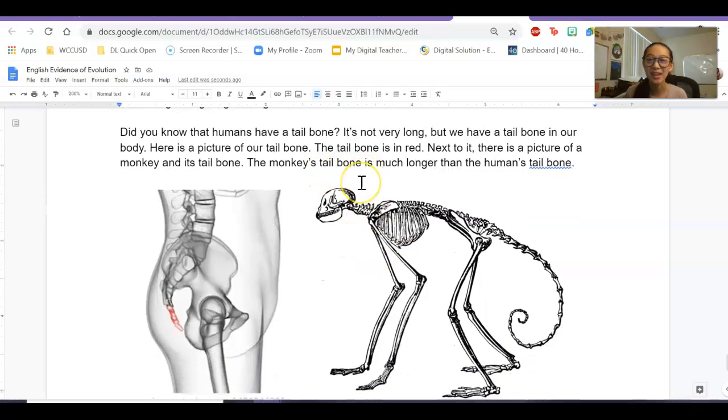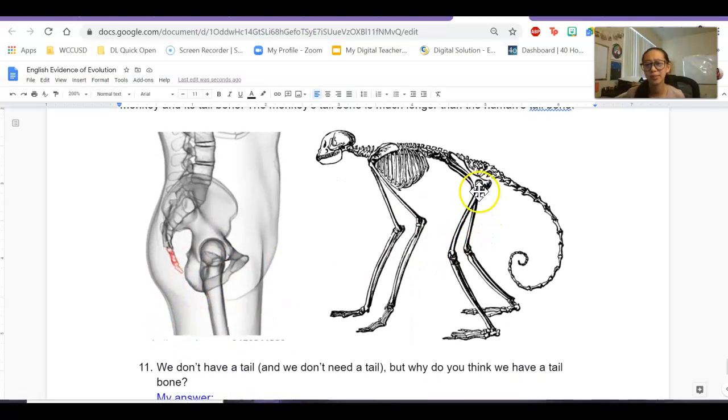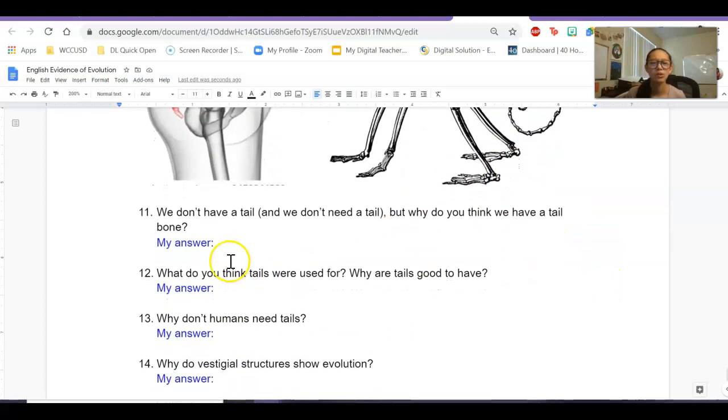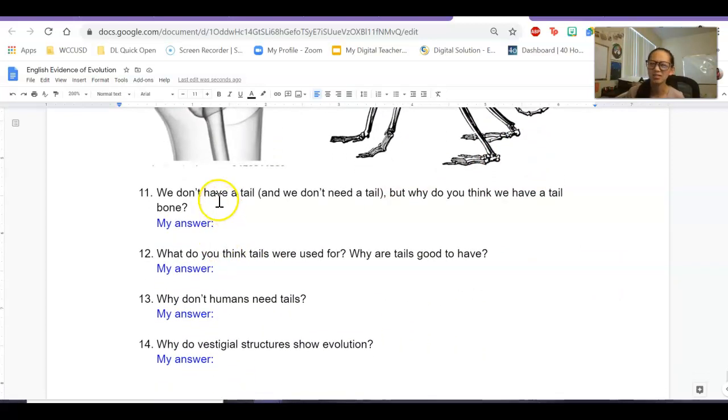So here's an example. Did you know that humans have a tailbone? Do we have a tail? No, we don't have a tail, but we have a tailbone. Look, it's right here. And everybody has that tailbone. And here's the picture of it. And here's a picture of a monkey's tail and their tailbone. So we don't have a tail and we don't need the tail, but why do you think we have a tailbone? And then you can write your answer here.